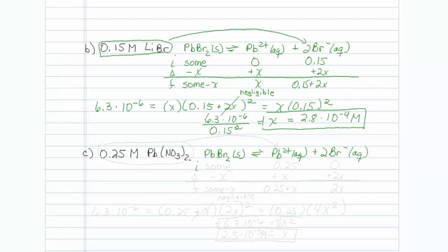Initially I start out with some, and notice that I am starting out with some lead 2 plus. That goes here. So I need to put 0.25 here and nothing. On my delta row minus x, plus x, plus 2x. And on my final row, this will be some minus x, 0.25 plus x and 2x.